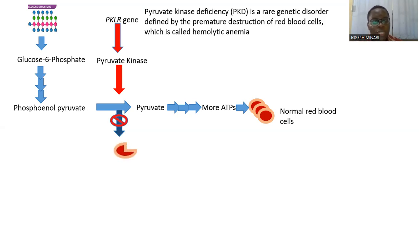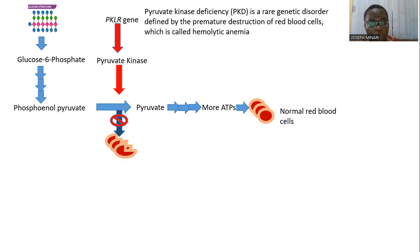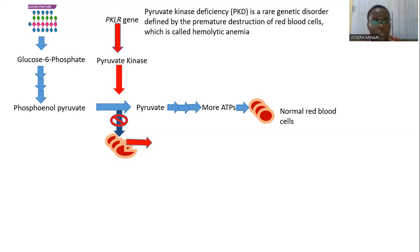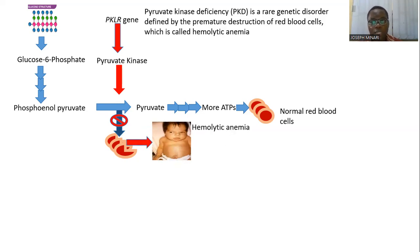With pyruvate kinase deficiency, you might not have enough ATP available for the red blood cells. So instead of lasting an average of 120 days before the red blood cells go off the system and new ones are produced, the red blood cells will just last for a few days or weeks and will get destroyed prematurely.